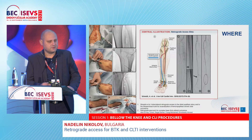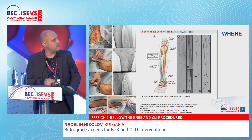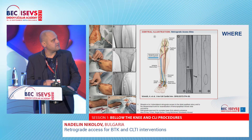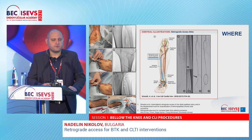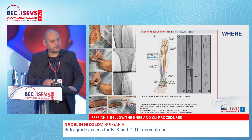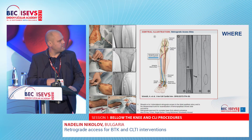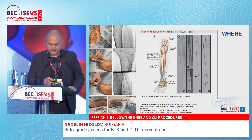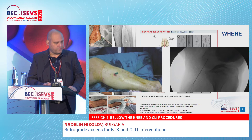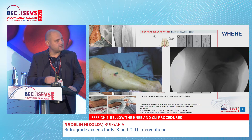Where to do the distal retrograde puncture? The most commonly used sites, as shown in this wonderful illustration from Schmidt, are the distal crural arteries: the dorsal pedal artery, the posterior tibial artery. My favorite access point is the proximal ATA, and of course the peroneal artery. The anterolateral approach to the tibial peroneal trunk and distal popliteal artery through the interosseous membrane is the popliteal access performed with the patient in supine position — the same location surgeons use for below-knee access.